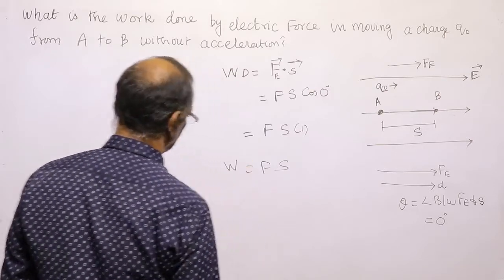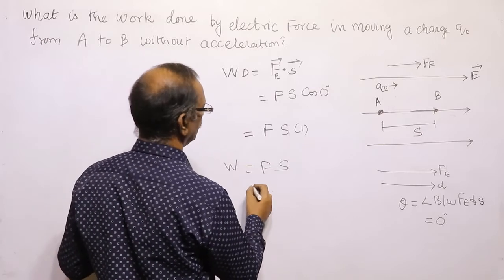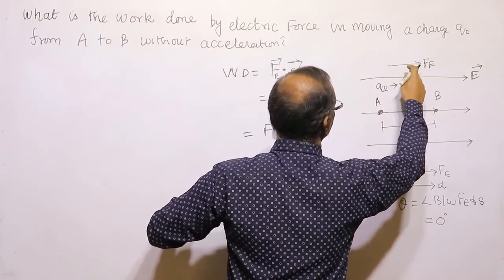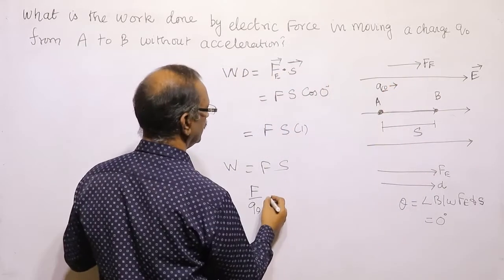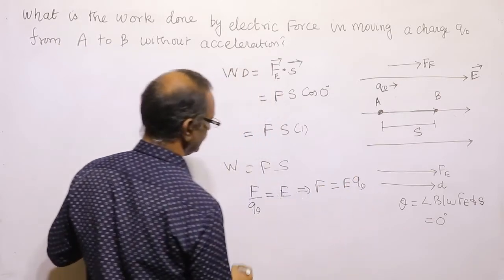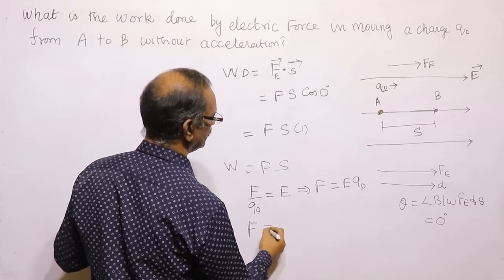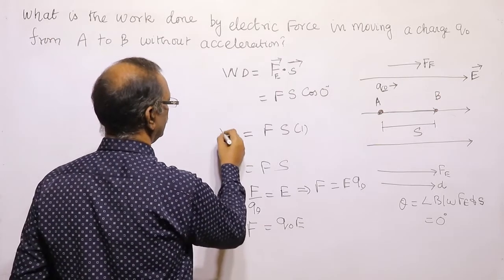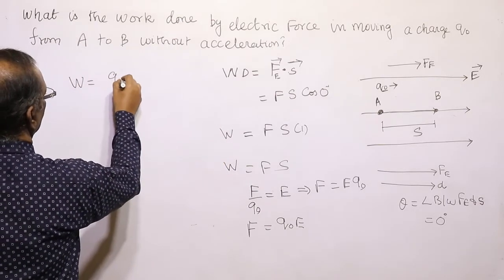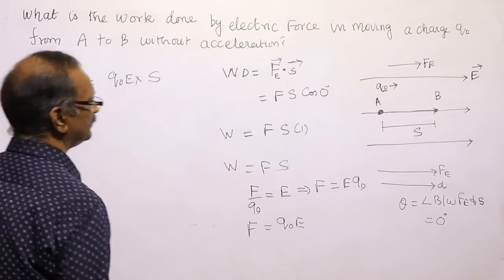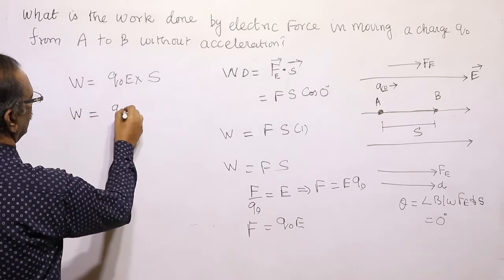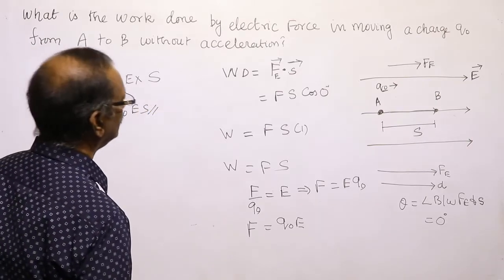That is the net work done — F into S into 1 equals F into S. The net force experienced by a test charge is F, and F by Q₀ equals electric field E. That means F equals Q₀ into E, or the force experienced by the charge equals Q₀ into E. So work done equals Q₀ into E into S — that is Q₀ES, the work done by the electric force.